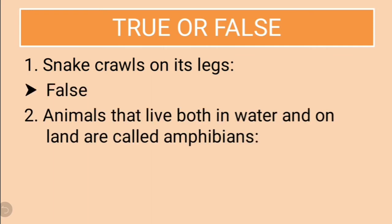Second: animals that live both in water and land are called amphibians. Yes, it is correct, because amphibians are the animals that live in both water and land. The answer is true.